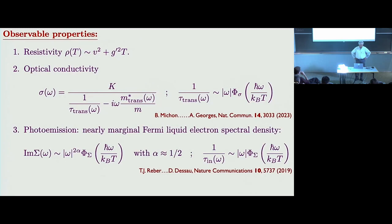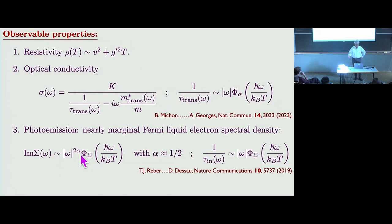This is data on YBCO. The photoemission, as I said, is a marginal Fermi liquid form — Dan DeSau has photoemission data and fits it to this scaling form with alpha, finding that alpha is doping-dependent. We find alpha equals one-half and he finds alpha around one-half near optimal doping. This marginal Fermi liquid self-energy also gives you T-log-T specific heat, as Hartnoll and McKinsey have looked at in the RMP.